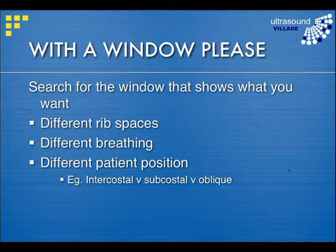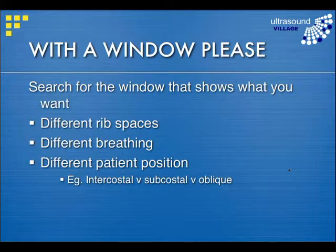You have to keep searching for that ultrasound window that will show you what you need to see. That can mean different rib spaces, different breathing or different parts of the breathing cycle, and different patient positions. It's quite common when looking at the liver, for example, to look subcostally, intercostally, take oblique views, and take longitudinal and transverse views — all just to make sure you've fully covered the area you're looking at.